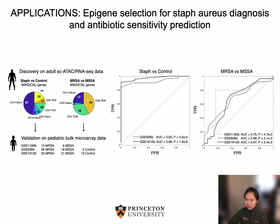To validate the predictive power of the identified epigenes for staph infections and subtypes, we used a cohort of three microarray gene expression datasets including a total of 54 MRSA and 35 MSSA patients. We found that MAGICAL is great at distinguishing staph infections from controls. Moreover, the MAGICAL epigenes can significantly classify MRSA from MSSA. The fact that the epigenes selected from adults are predictive even when tested on pediatric patients indicates high robustness of MAGICAL.